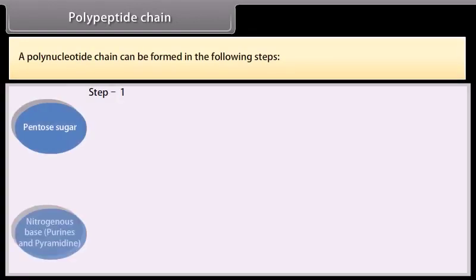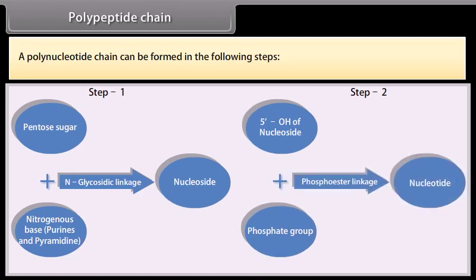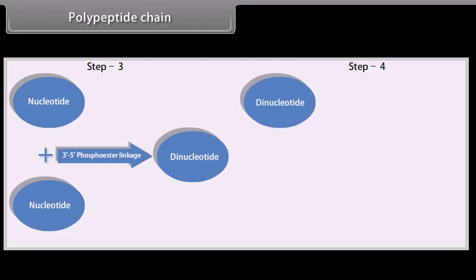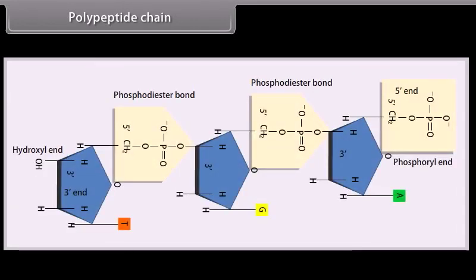A polynucleotide chain can be formed in the following steps. A polynucleotide chain has a phosphate moiety at one free end of ribose sugar. This is known as the 5-prime end of the polynucleotide chain. The other free end of ribose sugar has an attached OH group. This is called the 3-prime end of the polynucleotide chain.